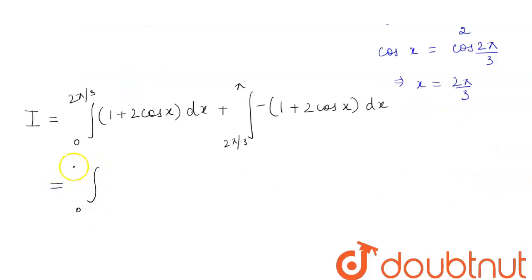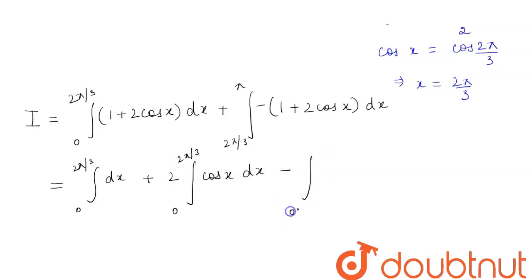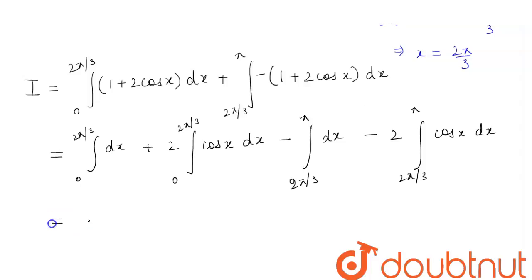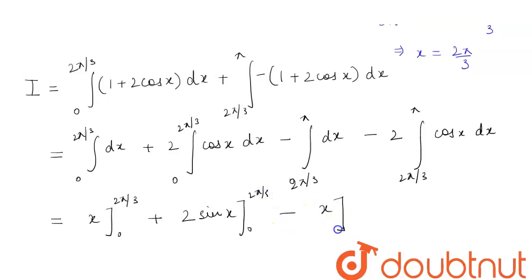Expanding, this equals the integration of dx from 0 to 2π/3, plus 2 times the integration of cosx dx from 0 to 2π/3, minus the integration of dx from 2π/3 to π, minus 2 times the integration of cosx dx from 2π/3 to π. Evaluating: [x] from 0 to 2π/3, plus 2[sinx] from 0 to 2π/3, minus [x] from 2π/3 to π, minus 2[sinx] from 2π/3 to π.